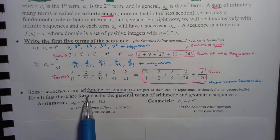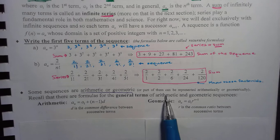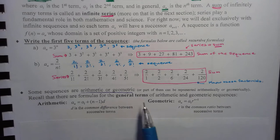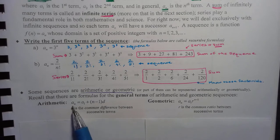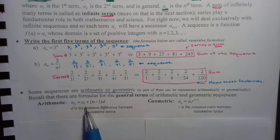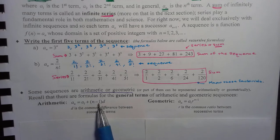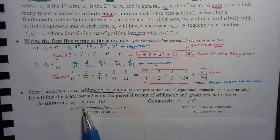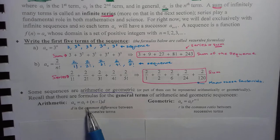Some sequences are arithmetic or geometric, or parts of them can be represented arithmetically or geometrically. Recall that there are formulas for the general terms of arithmetic and geometric sequences. An arithmetic sequence is defined by A sub n equals A sub 1 plus n minus 1 times d, where d is the common difference. So if my first term is 5 and my common difference is 1, then the next term would be 6, then 7, and so forth.